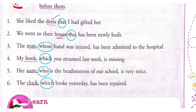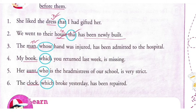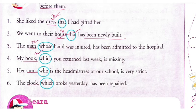In the second sentence, the noun 'house' is related to the next part using the pronoun 'that'. 'Man' is also a noun, related to the next part using 'whose' — 'whose hand was injured'. 'The man had been admitted to the hospital' is the main clause; the remaining part is the relative clause. 'My book which you returned last week is missing' — 'book' is the noun and 'which' is the relative pronoun.